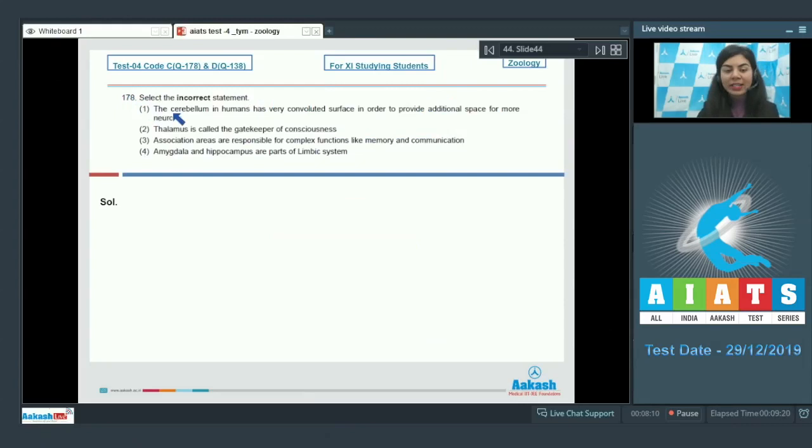Question 178: Select the incorrect statement. The cerebellum in humans has very convoluted surface in order to provide additional space for more neurons. Thalamus is called the gatekeeper of consciousness. Association areas are responsible for complex functions like memory and communication. Amygdala and hippocampus are parts of limbic system. The cerebellum is very convoluted to accommodate more neurons. So this is the right statement.